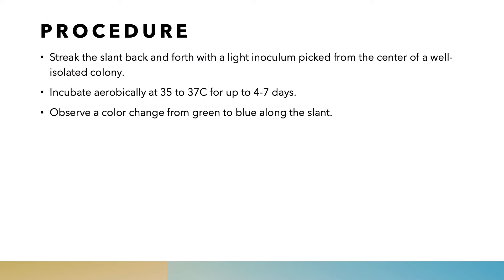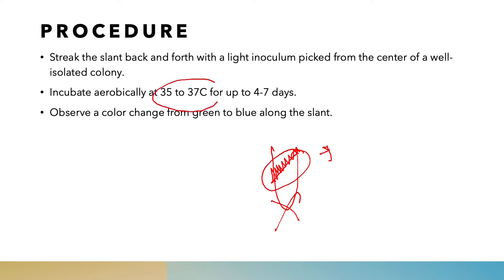For the procedure, we use a tube containing Simmons citrate medium. In this test we only need the slant — we don't need the butt. We streak the slant and incubate at 37 degrees centigrade for four to seven days. If we observe blue color within four to seven days, the result is citrate positive. If no blue color appears within four to seven days of incubation, it is citrate negative.